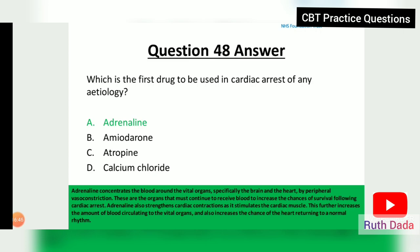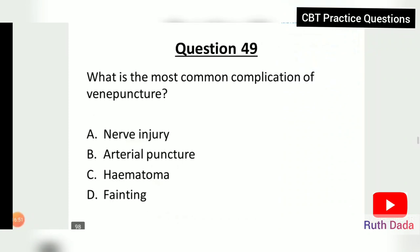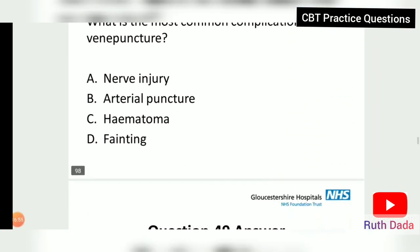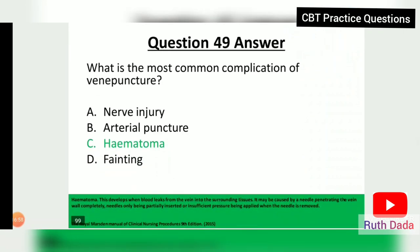Question 49: What is the most common complication of venipuncture? The most common complication is hematoma, which develops when blood leaks from the vein into the surrounding tissue. It may be caused by a needle penetrating the vein wall completely, the needle only being partially inserted, or insufficient pressure being applied when the needle is removed.